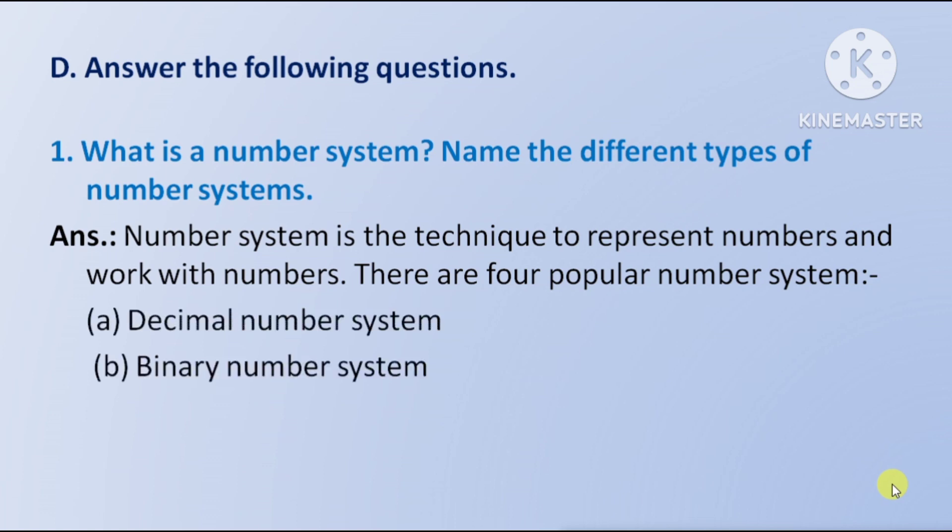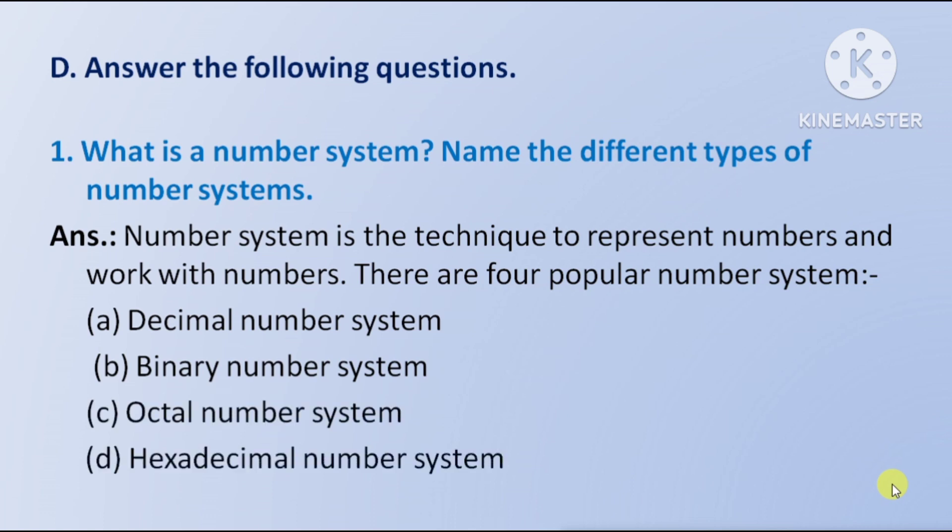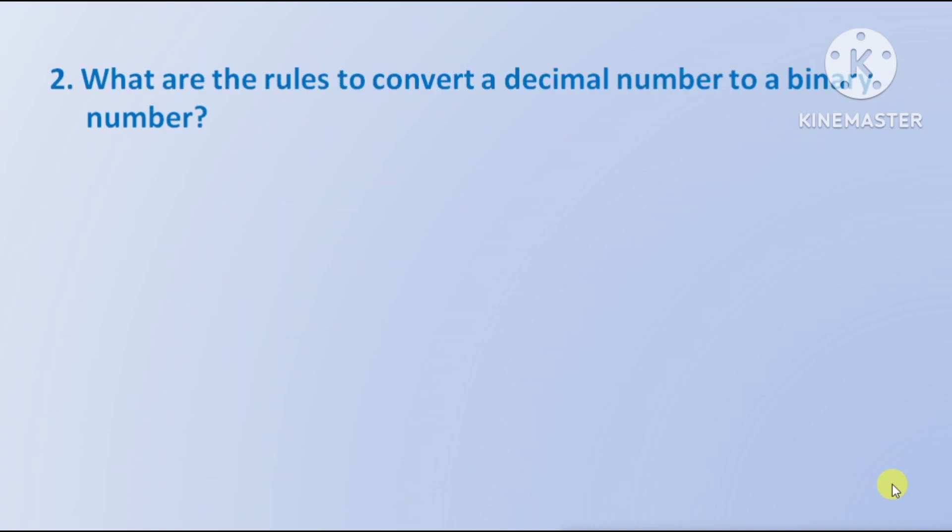There are four popular number systems: first, decimal number system; second, binary number system; third, octal number system; and fourth, hexadecimal number system.